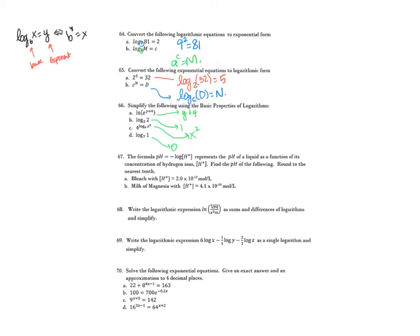Let me write out those properties of logs. Natural log of e^x equals x. E to the natural log of x equals x. Log base A of A equals 1. A to the log base A of x equals x. Log base A of A^x equals x. And natural log of 1 equals 0. These are all properties of logarithms.